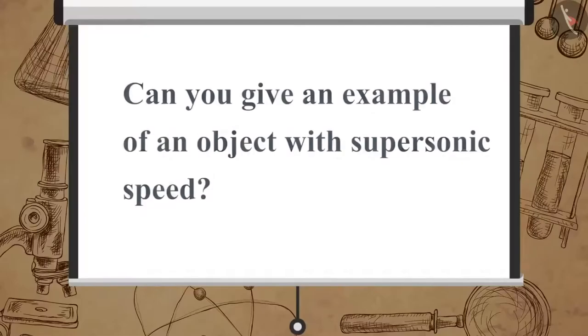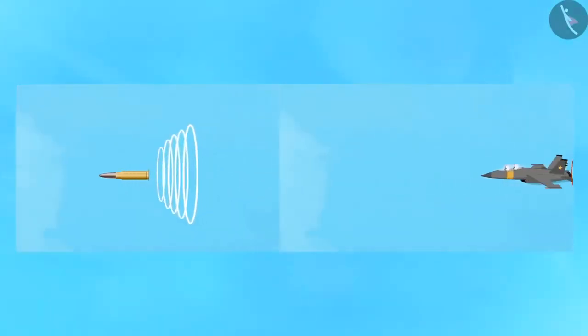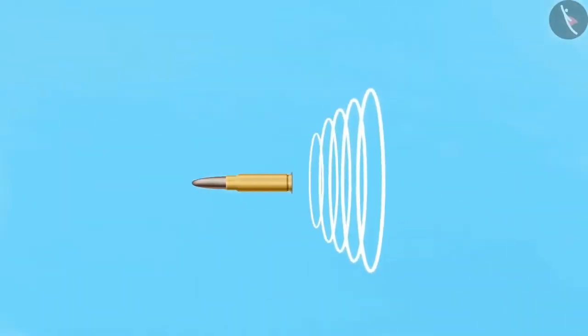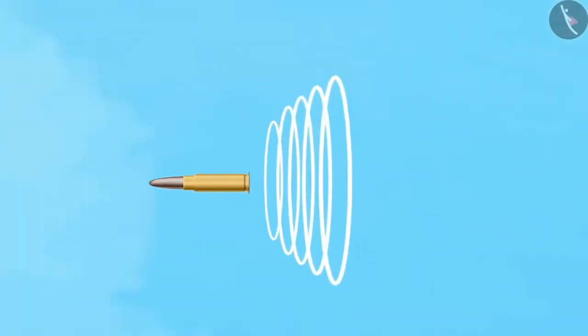Can you give an example of an object with supersonic speed? Bullets and some jet aircraft are some objects which travel at supersonic speed. When a sound-producing source moves with a speed more than the speed of sound, it produces shock waves in the air.